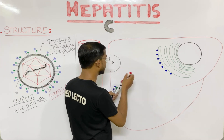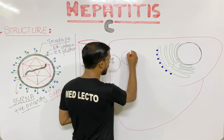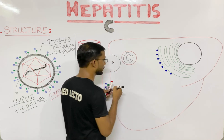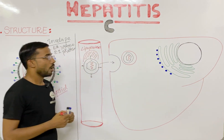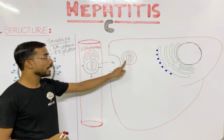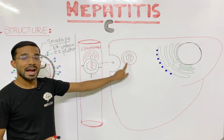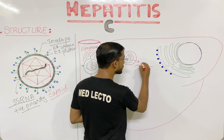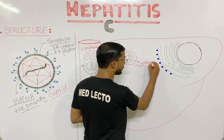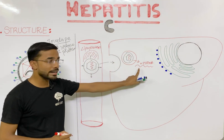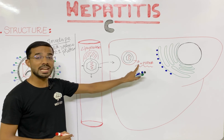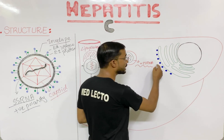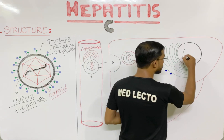During endocytosis, the virus is enclosed in an endosome. Inside the endosome, low pH conditions cause the release of the positive polarity single-stranded RNA. Because the RNA is positive polarity, it will act directly as messenger RNA.